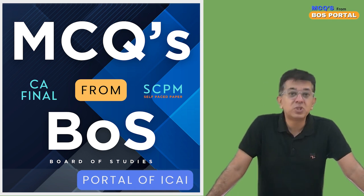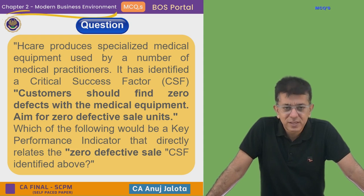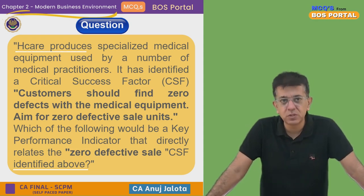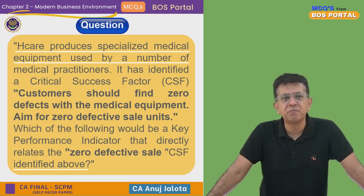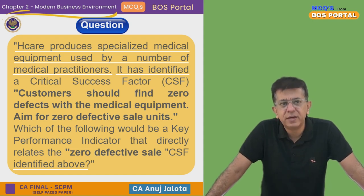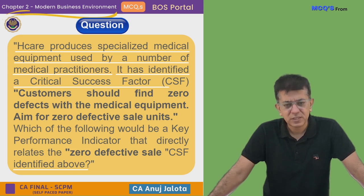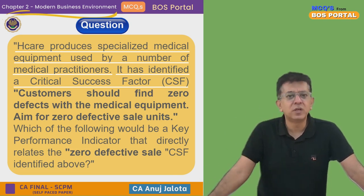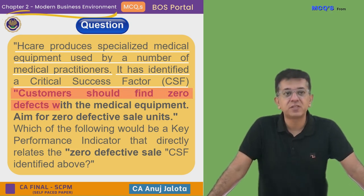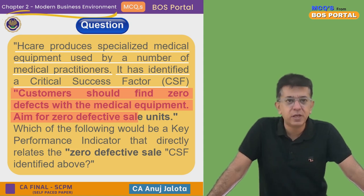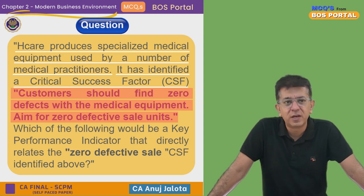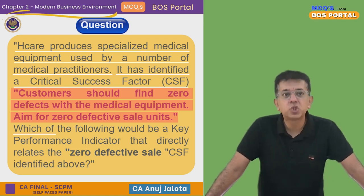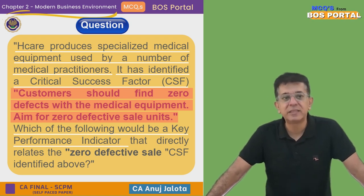We are on to Chapter Number Two, which is all about Modern Business Environment. This chapter is mainly about Total Quality Management. The question for today: HealthCare produces specialized medical equipment used by a number of medical practitioners. It has identified a critical success factor — CSF. These are objectives that you wish to achieve; if you achieve all these small objectives, you will earn the vision of the company. The CSF here is: customers should find zero defects with the medical equipment — aim for zero defective sale units. This is also sometimes called the Six Sigma concept, where defects are only 3.4 per million units, almost zero.